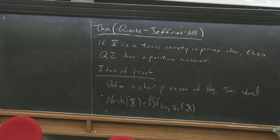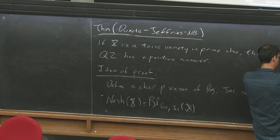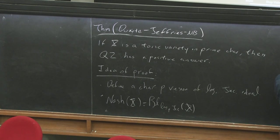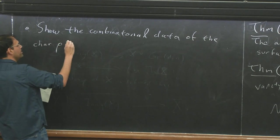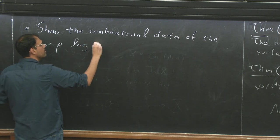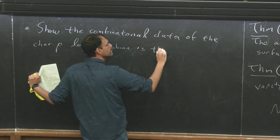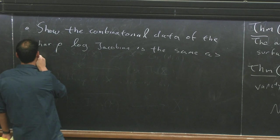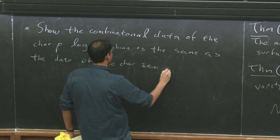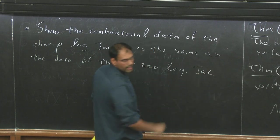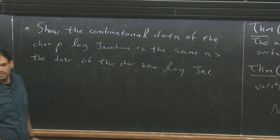The log p Jacobian is the Nash Blow-up. The Nash Blow-up is the blow-up of the logarithmic characteristic p logarithmic Jacobian ideal. And actually this is true in general, not only for surfaces. The next step is where we do really need surfaces. And then we have to prove that the combinatorial data of the characteristic p logarithmic Jacobian is the same as the data of the characteristic zero logarithmic Jacobian.